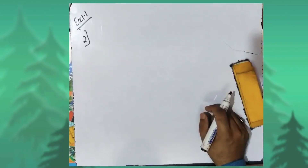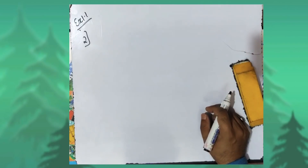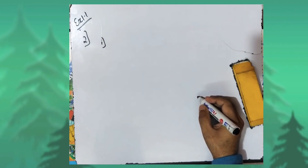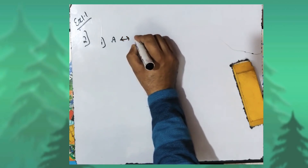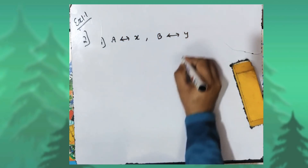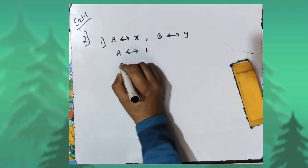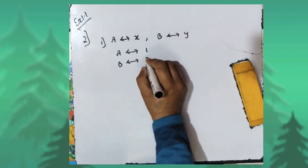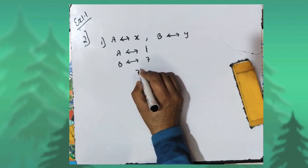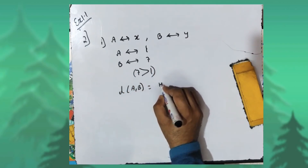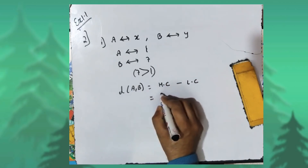In the second question, if the coordinate of A is x and the coordinate of B is y, find distance AB in each sum. In the first sub-part, coordinate of A is one and coordinate of B is seven. Since seven is greater than one, distance AB is found by higher coordinate minus lower coordinate.